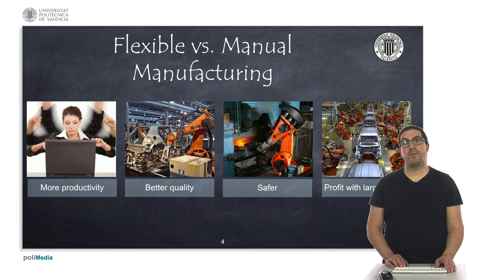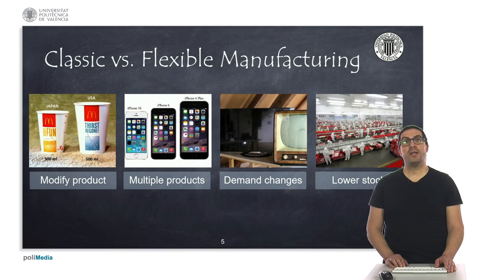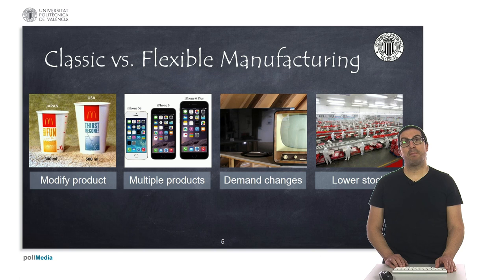If we compare flexible manufacturing versus manual manufacturing, we observe that its productivity is much higher, the quality is better, and it is also safer and more profitable for larger series, despite having a low part cost. If we compare flexible manufacturing versus classic manufacturing, we observe that through flexible manufacturing we are able to modify and adapt the product to market needs and changes in product demands. Producing similar products in a flexible manufacturing system represents no challenge and no extra cost because it has been designed for that. In general, we will have lower stock because the production can be adapted to demands, maintaining a medium or low cost per part.